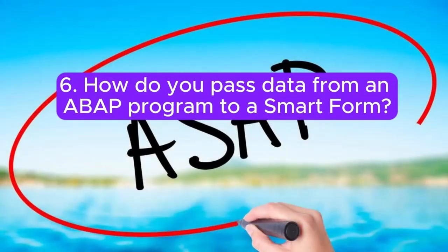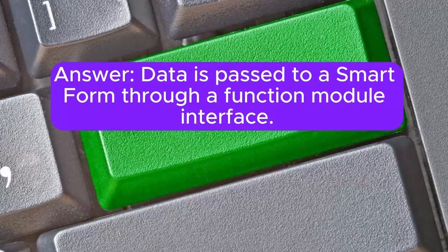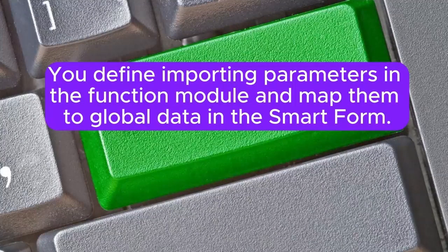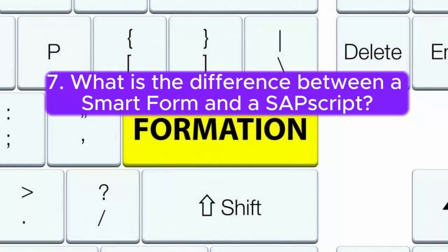6. How do you pass data from an ABAP program to a SmartForm? Answer: Data is passed to a SmartForm through a function module interface. You define importing parameters in the function module and map them to global data in the SmartForm.